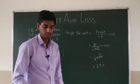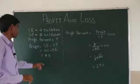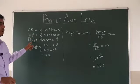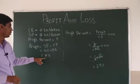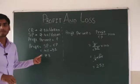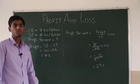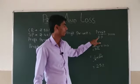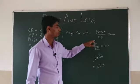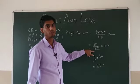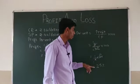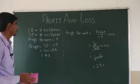I hope all of you understand this. Cost price is Rs 32, selling price is Rs 40. To find profit percent, we first found profit: selling price minus cost price, 40 minus 32 equals 8. Then profit percent equals profit over cost price into 100, which is 8 over 32 into 100, giving 1 over 4 into 100. So 25% profit is there in this transaction.